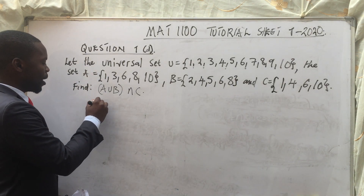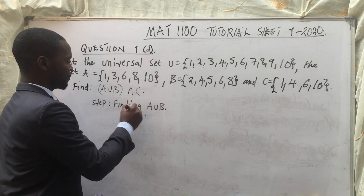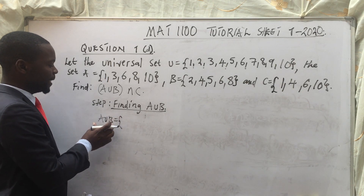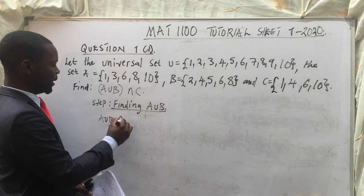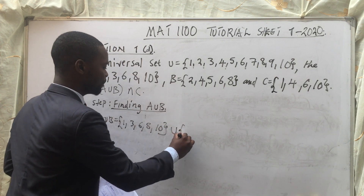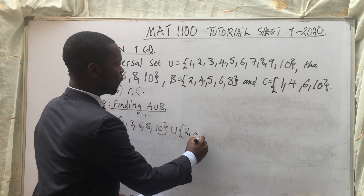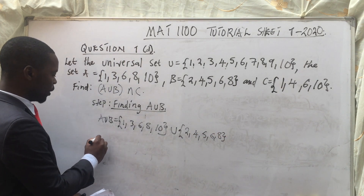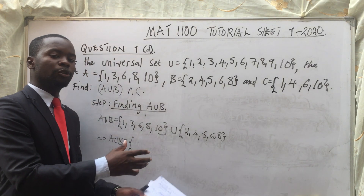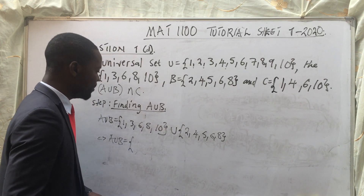We are going to do Step 1, which will involve finding A union B. So A union B — if we can illustrate this — what is A? A is {1, 3, 6, 8, 10}. Union this sign. And then set B — what is set B? Set B, we have got {2, 4, 5, 6, 8}. So this simply means that A union B, we are going to combine all the elements which are in set A with the elements which are in set B, but without repeating the common elements.